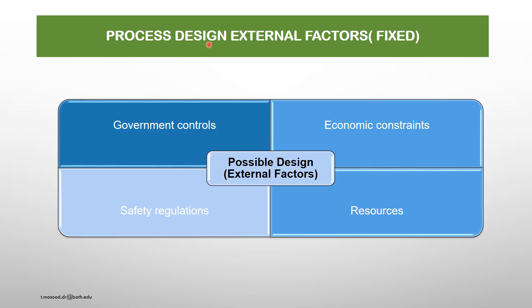Process design external factors — fixed or constant. The possible design external factor comprises four factors: government controls, economic constants, safety regulations, and resources. These are fixed or constant — government legislation on environment and safety, safety regulations, fixed budget for the project, and limited resources. These four factors must be considered during the design phase.